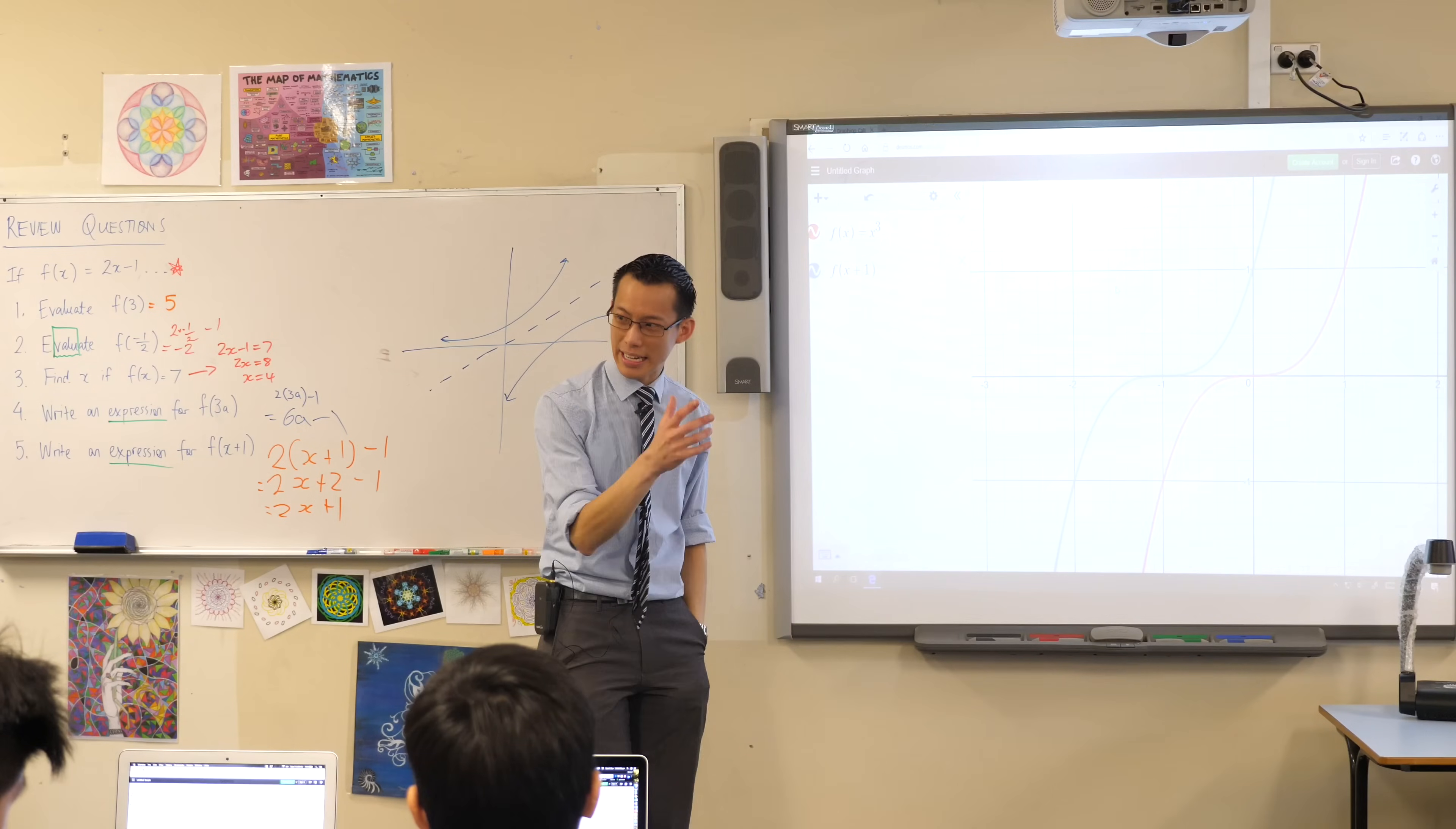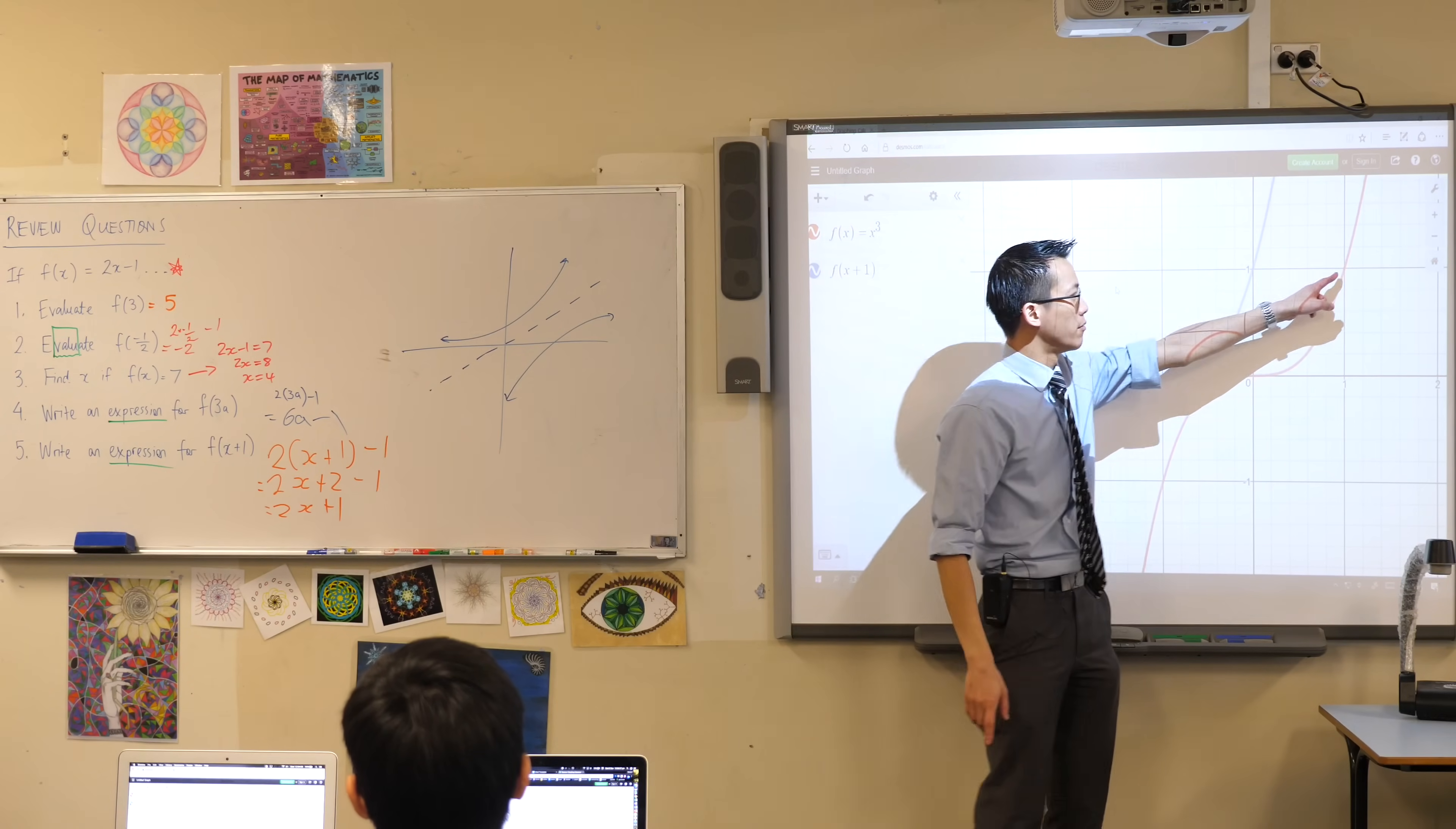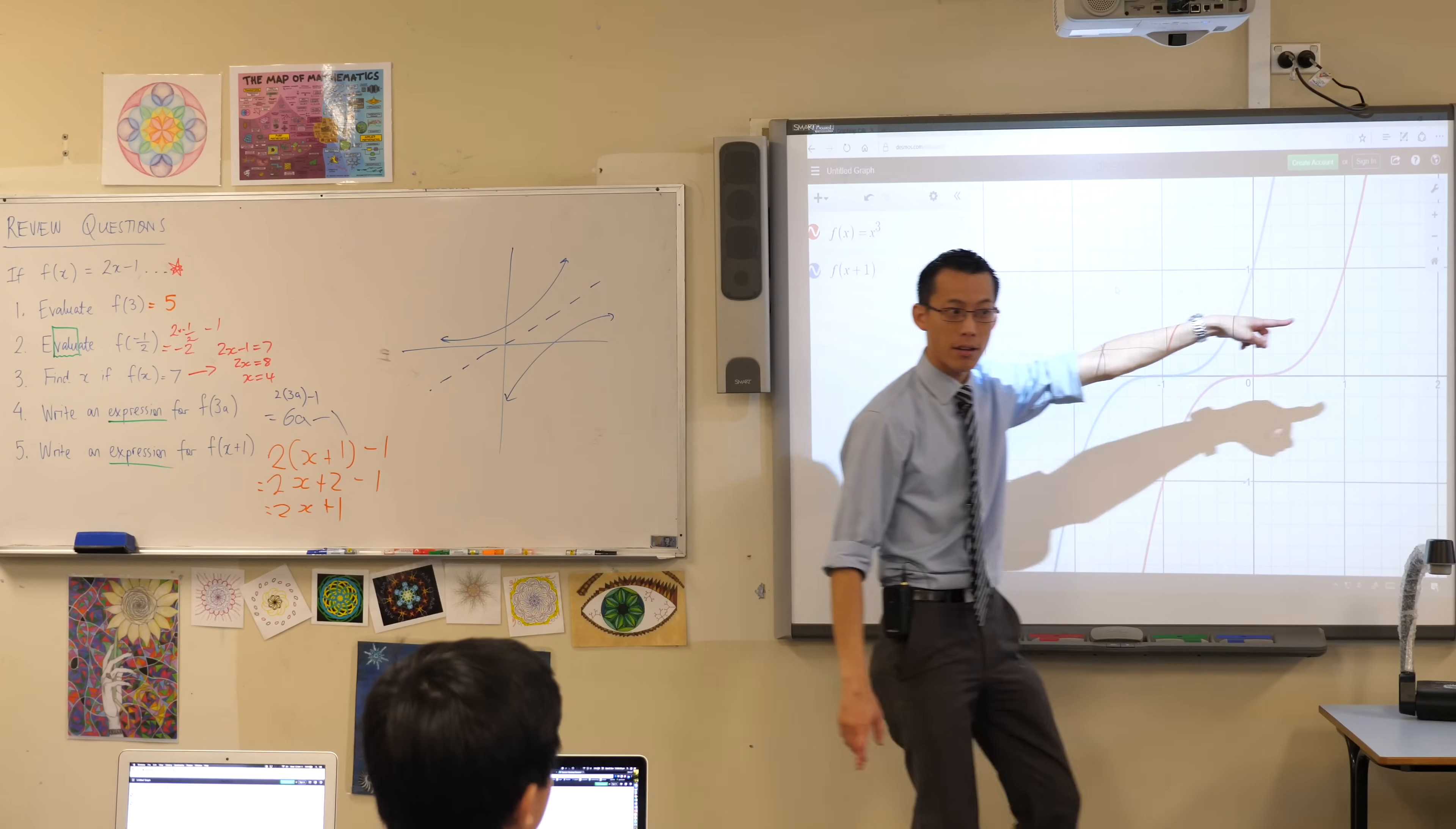On the Cartesian plane, when you see plus 1, what direction does that usually send you? Now I'm getting different answers because it depends on what kind of plus 1 it is, right? So for example, if I said to you, here's a coordinate 1, 1, and I said add 1 to that, well then you'd go over to 2, 1. You'd go to the right. Okay.